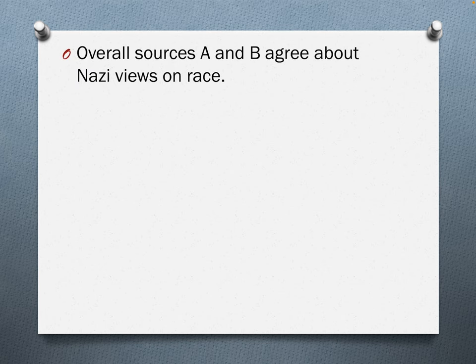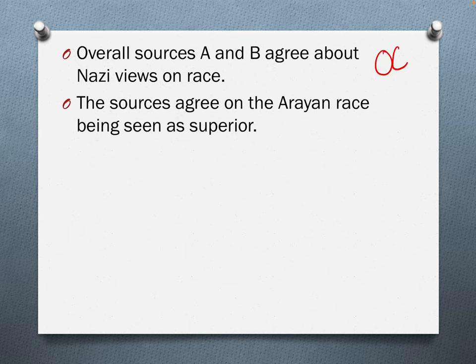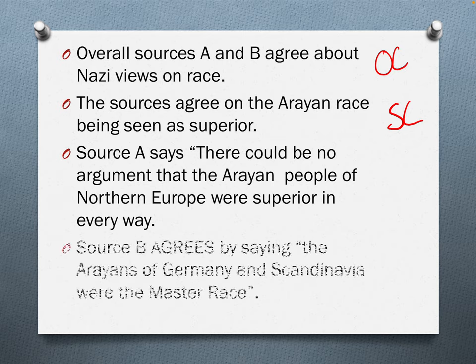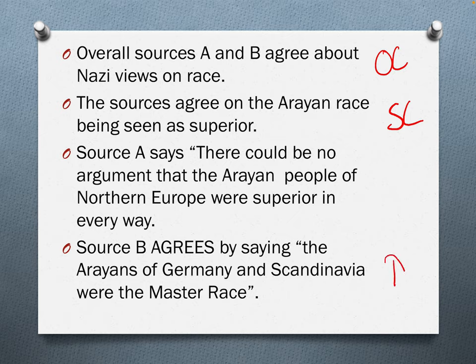So we start to answer our question with our overall comparison: 'Sources A and B agree about Nazi views on race.' Then a simple comparison: 'The sources agree about the Aryan race being superior.' Then our developed comparison — we take the quote from source A: 'Source A says there could be no argument that the Aryan people of Northern Europe were superior in every way, and source B agrees by saying the Aryans of Germany and Scandinavia were the master race.' That's our developed comparison.